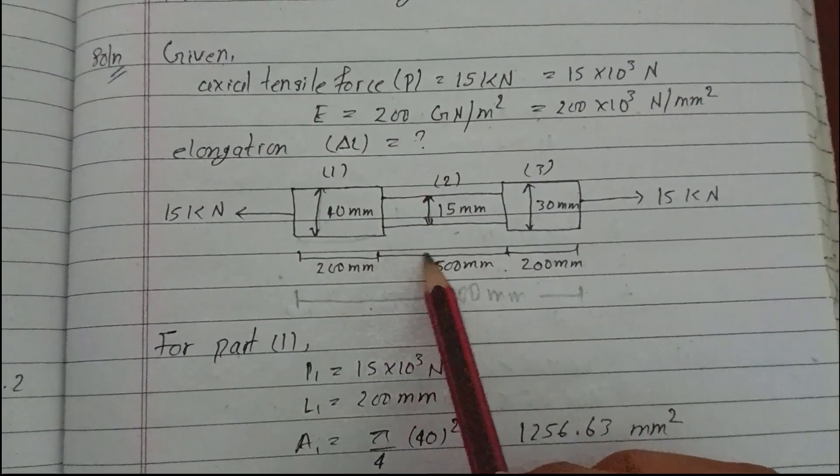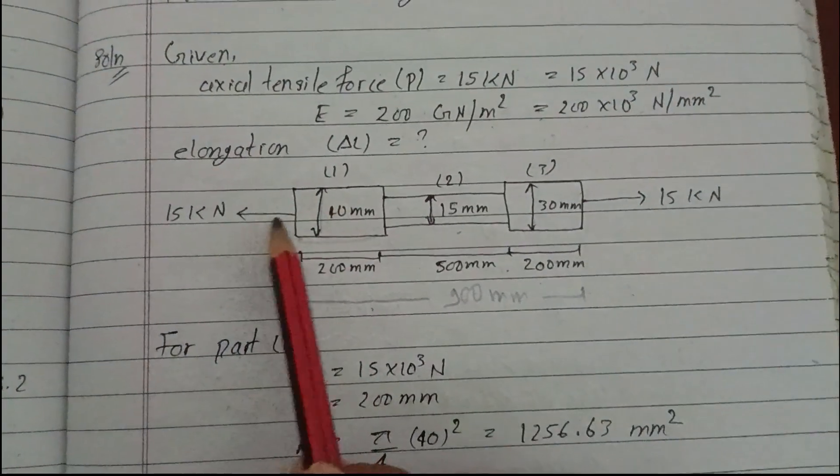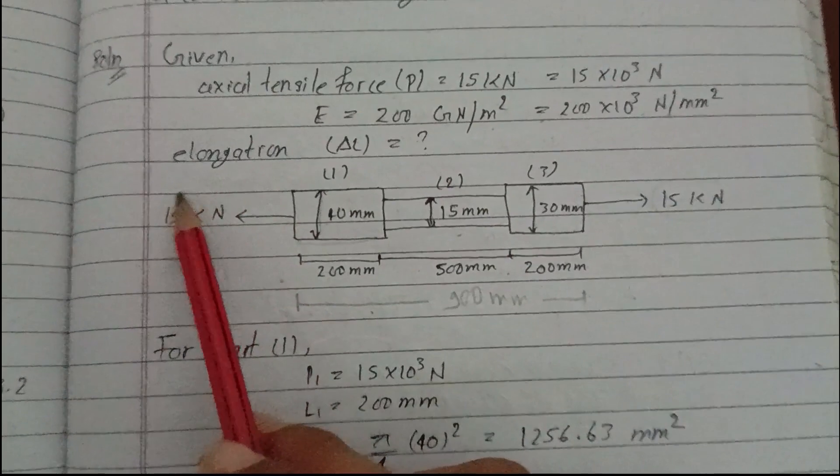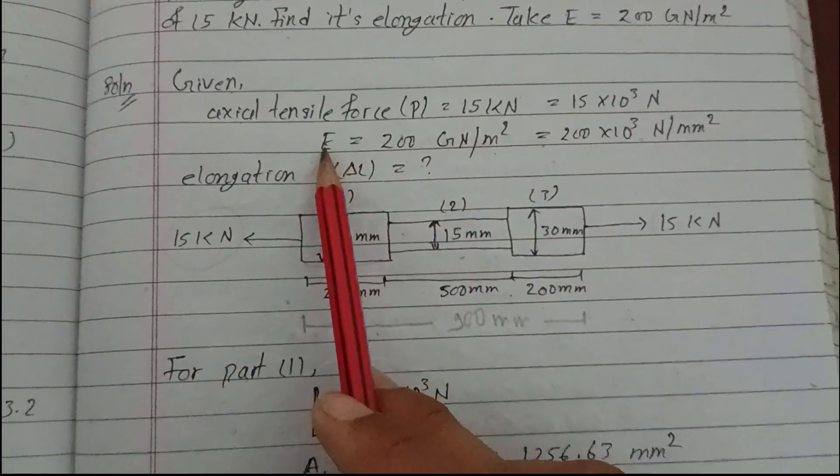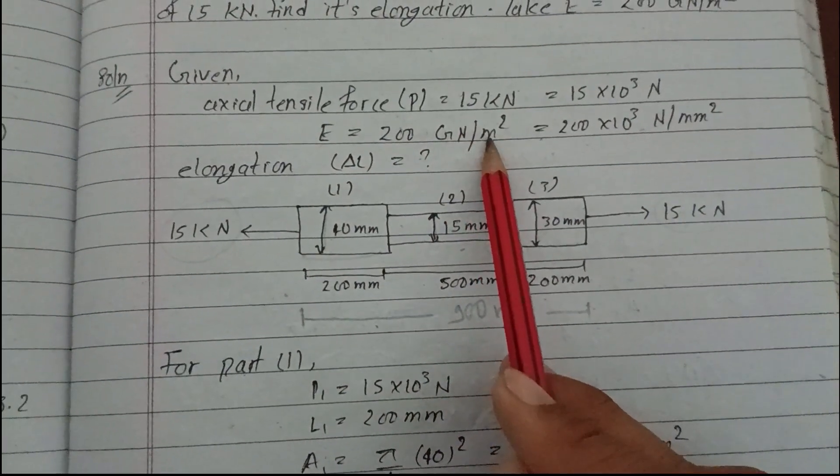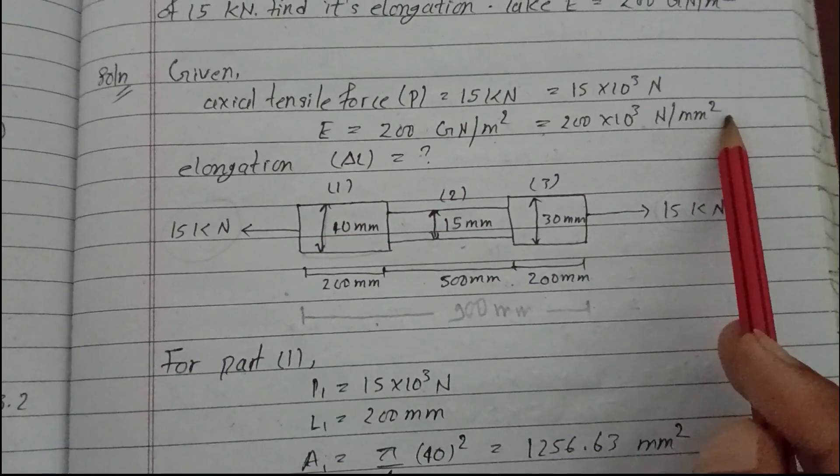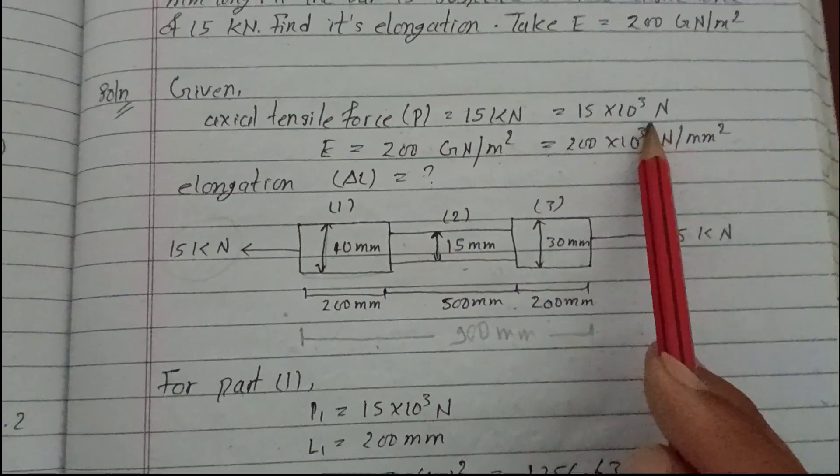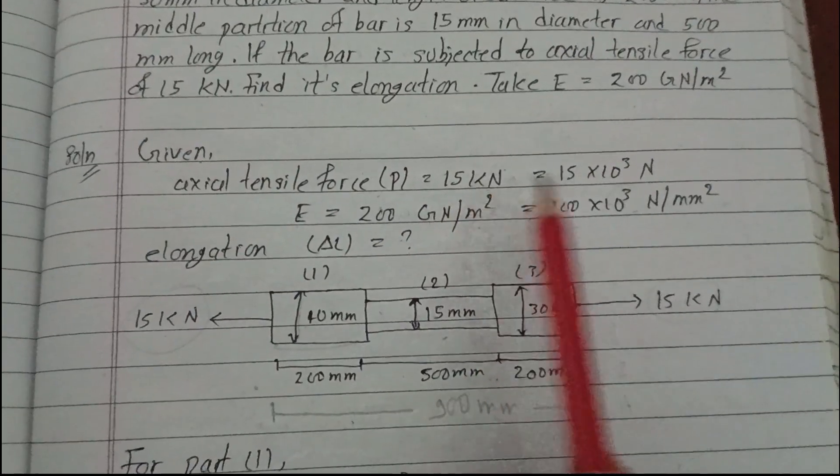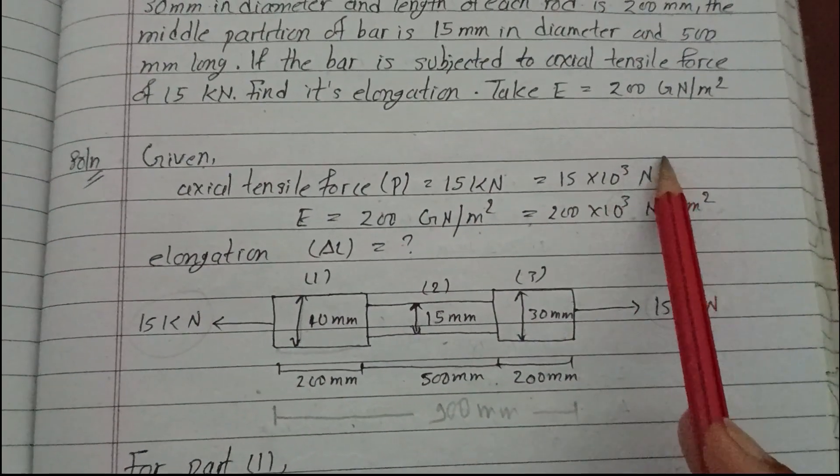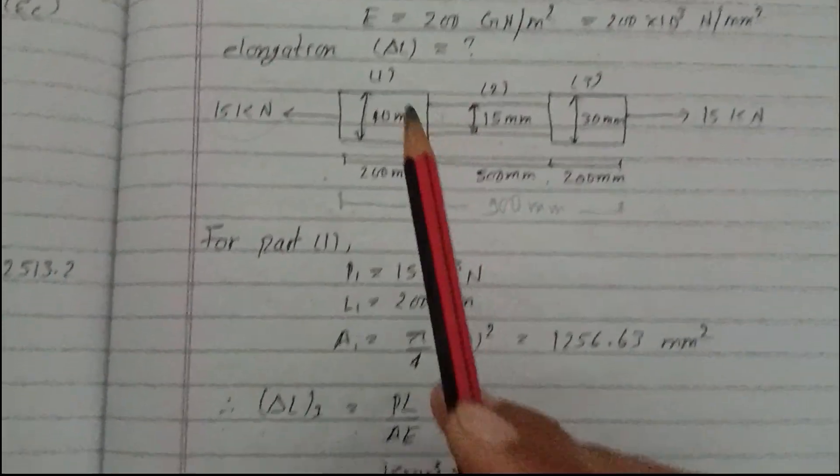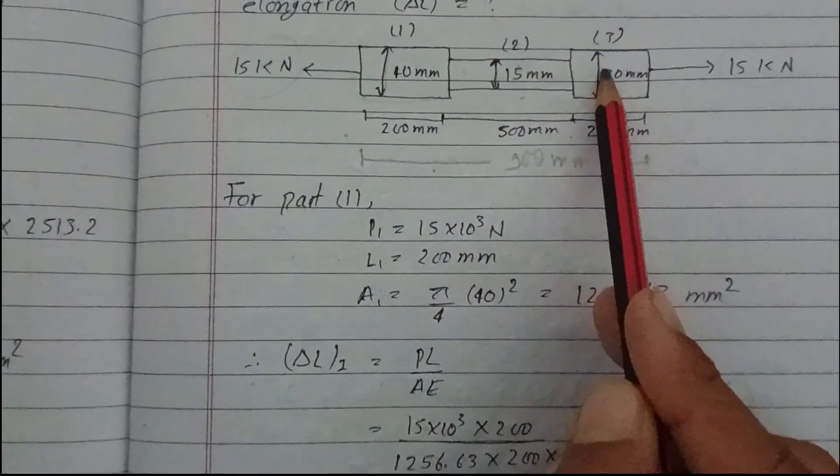If the bar is subjected to an axial tensile force of 15 kilo Newton, find its elongation. Take E equals to 200 giga newton per meter squared. I will solve this problem now. The bar has three parts: part one, part two, and part three.